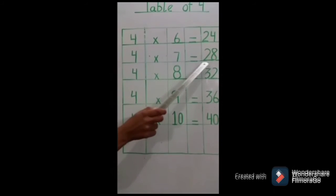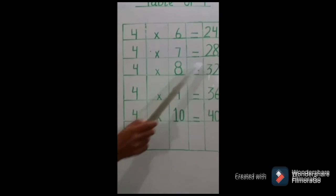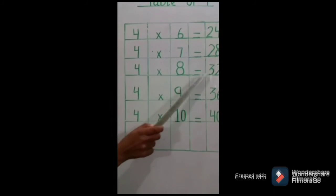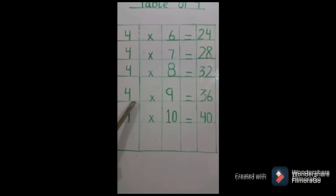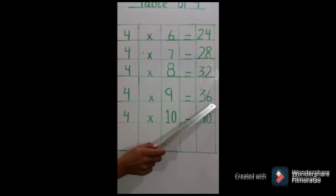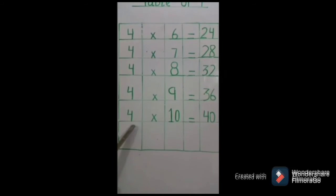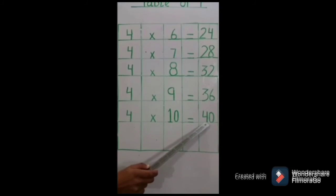4 sevens are 28, 28. 4 eights are 32, 32. 4 nines are 36, 36. 4 tens are 40, 40.